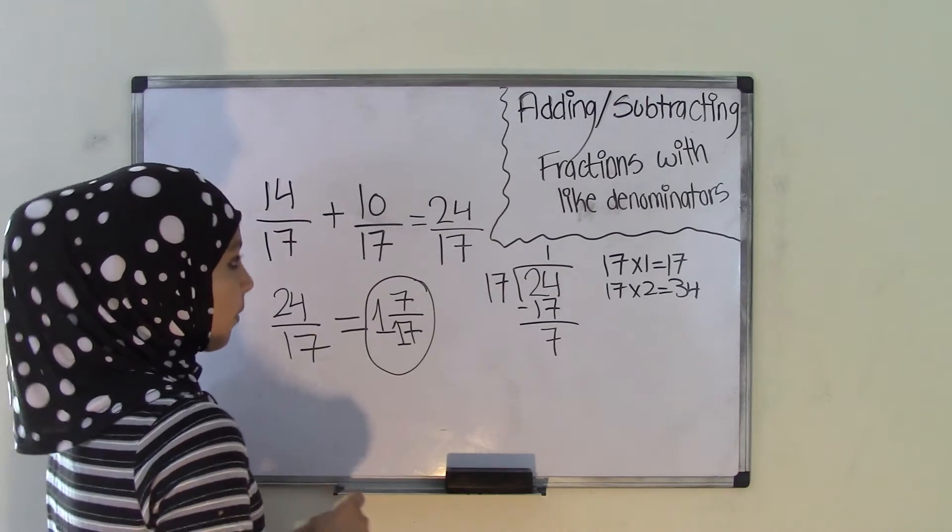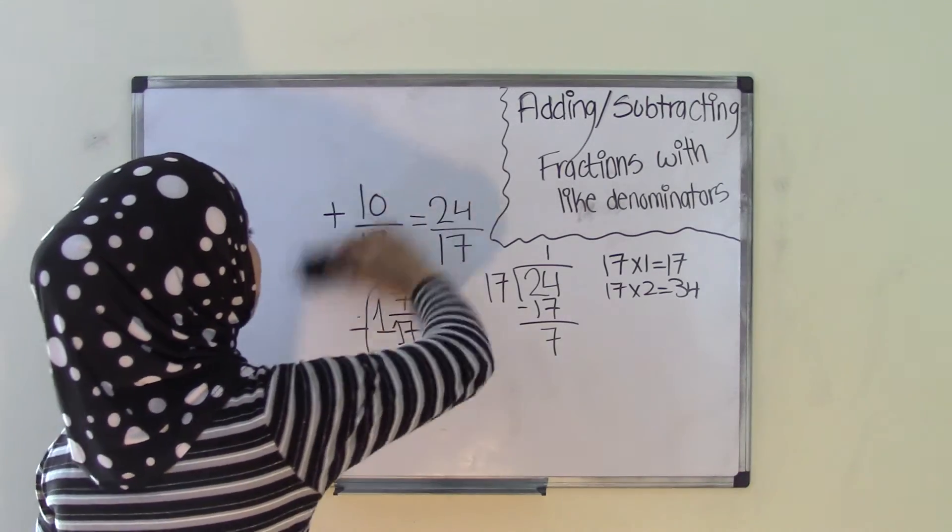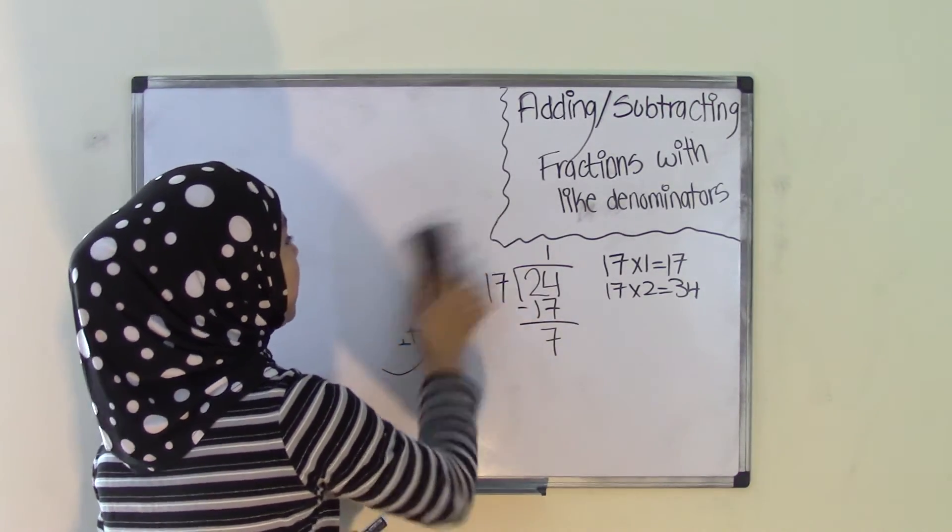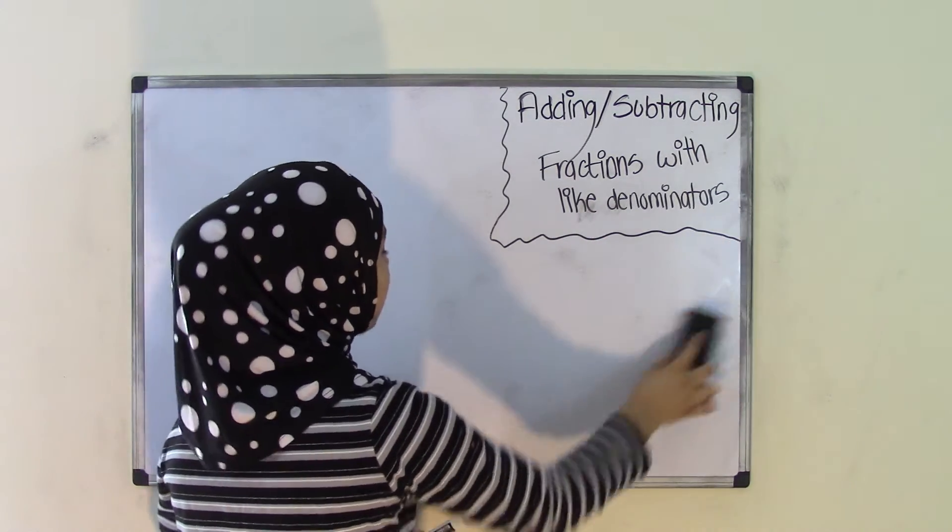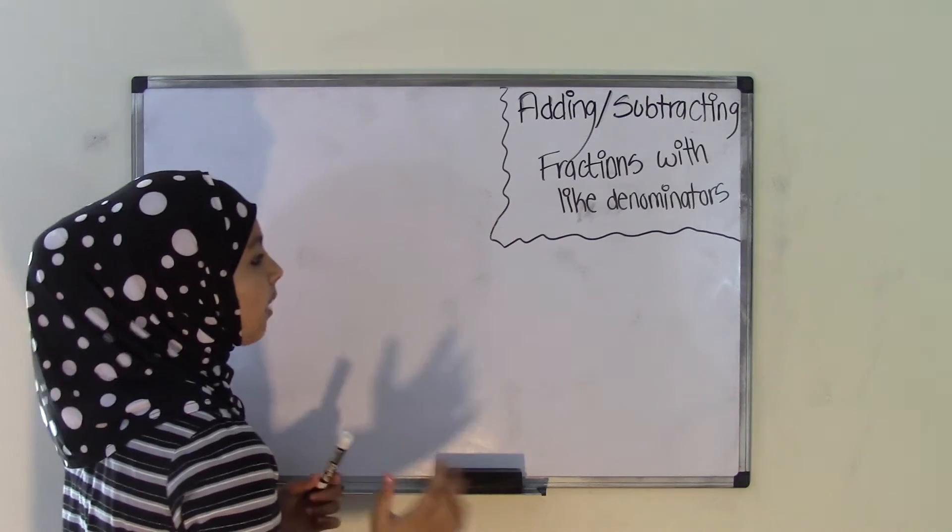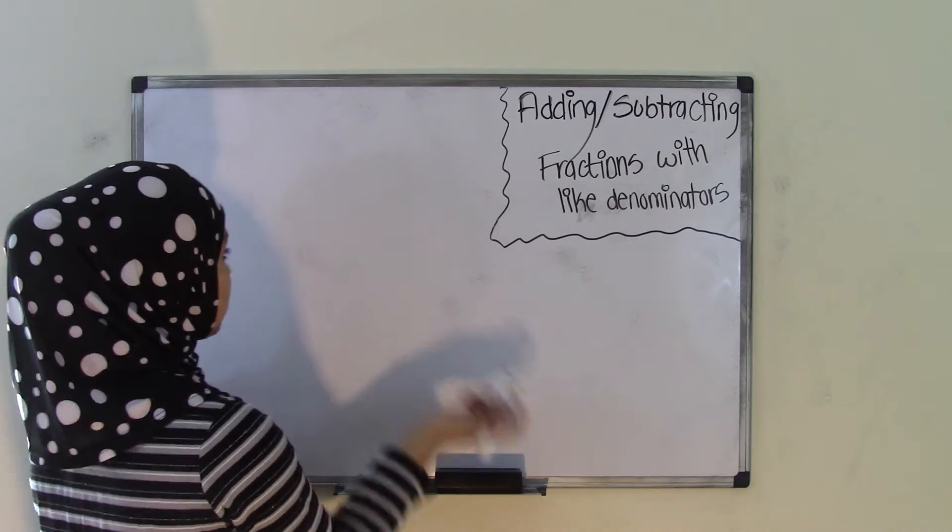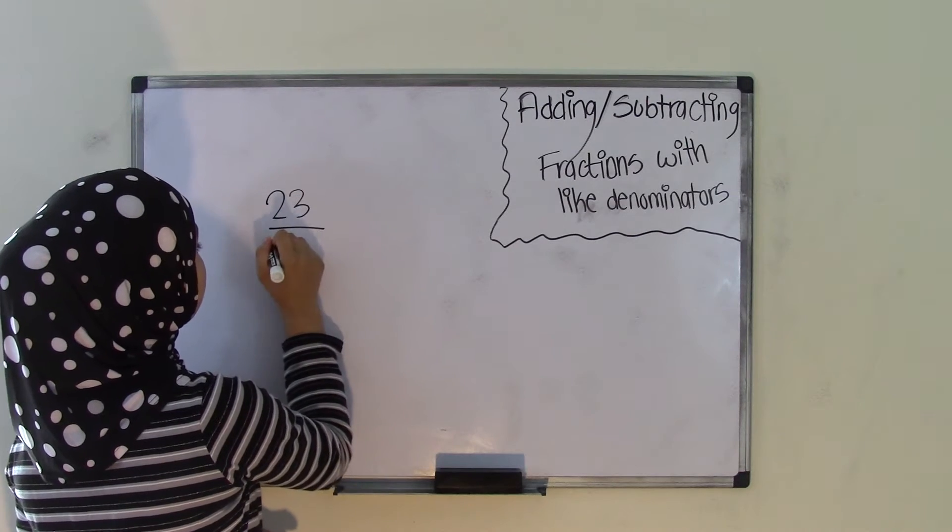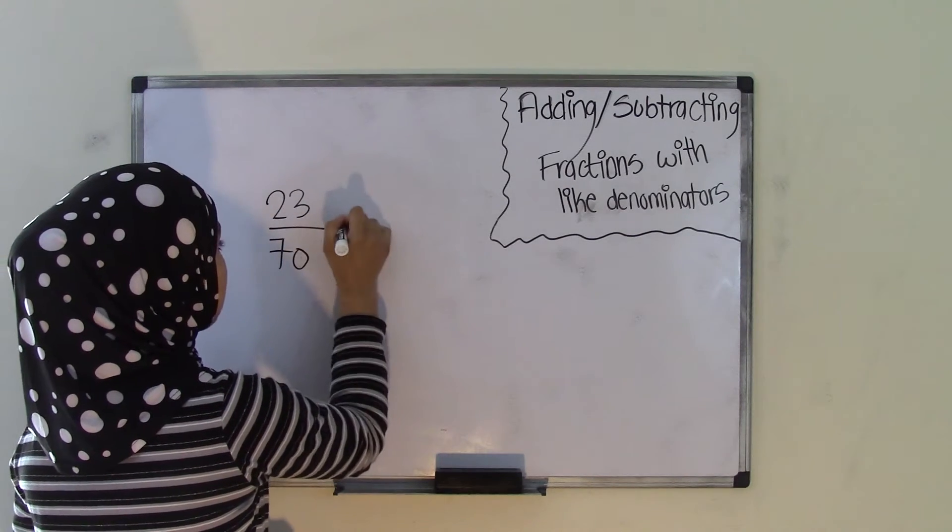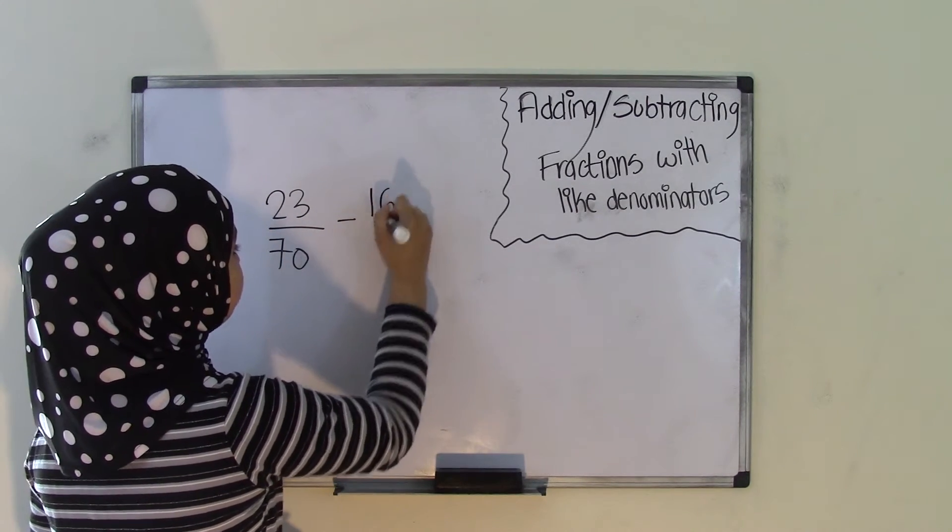Now what if you had another problem that had to do with subtraction? So now you're just going to be doing subtraction. Now, as you have noticed, with like denominators, you don't really have to do anything with the denominators. You're just going to keep the same denominator. So now let's do something with subtraction. Say 23 over 70 minus 16 over 70.